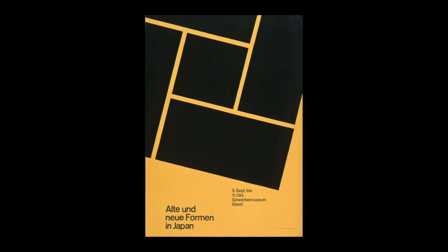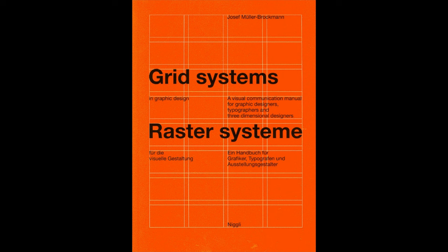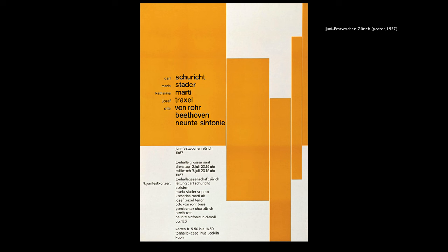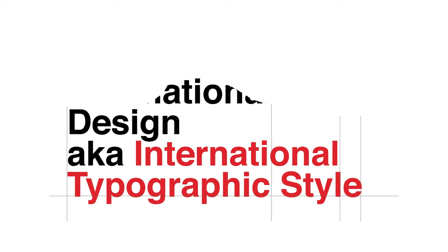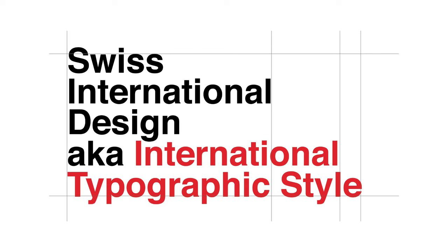The next art and style movement we're going to talk about is probably the most influential one in modern graphic design. We all are taught this method when we go to design school or when we're starting to learn design. This one is really, really important to pay attention to because it established the basics for a lot of things we do today. The next one is Swiss international design, also known as the international typographic style — some people shorten it to just say Swiss design.